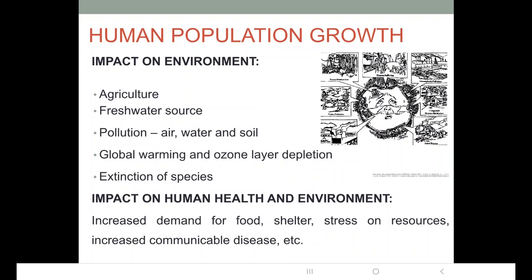To feed such a huge population, land is cleared and intensive farming methods are practiced. These methods try to derive maximum productivity from a given piece of land, so more fertilizers, more water, and more pesticides are used. On one hand, this puts stress on water resources; on the other hand, it increases the quantity of fertilizers and pesticides used, which have adverse impacts on the soil.